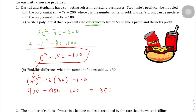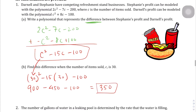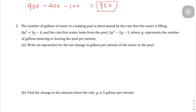So the difference when c is 30 is 350. Now question number 2: the number of gallons of water in a leaking pool is determined by the rate that the water is filling and the rate that water leaks from the pool. The filling rate is 8g squared plus 3g minus 4, and the leaking rate is 9g squared minus 2g minus 5. Write an expression for the net change — so we're going to subtract these.